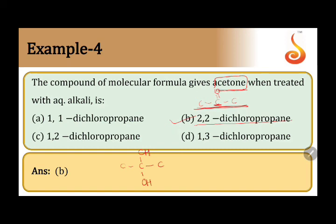When Cl is replaced by OH, then OH is lost from this carbon and H is lost from this carbon, and we are getting propanone.